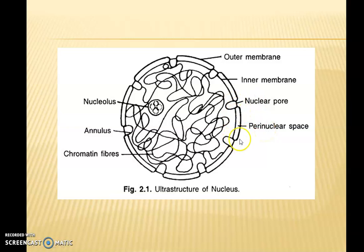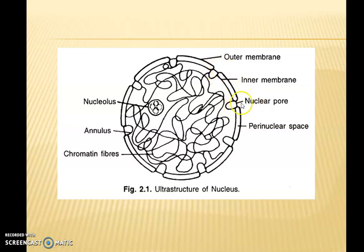The nuclear membrane is closed — the inner and outer membranes are connected and joined. They are closed in the regions where the nuclear pores are present; the outer and inner membranes come together at those points. These are the pores. And the space between the inner and outer membrane is called the peri-nuclear space.